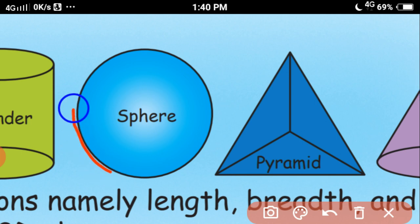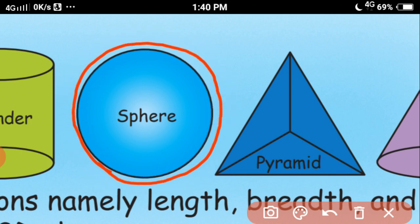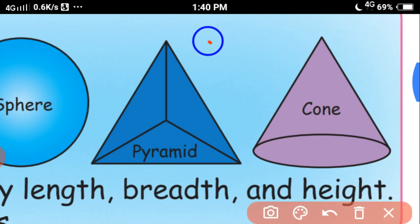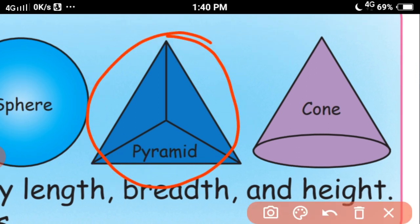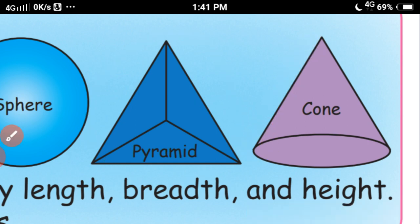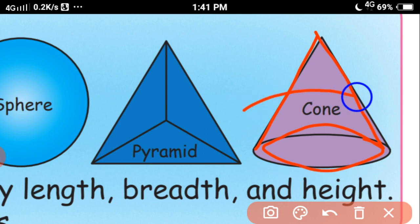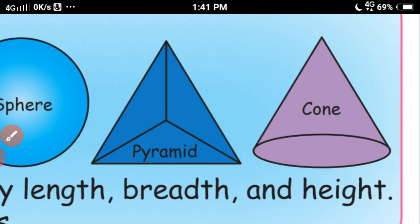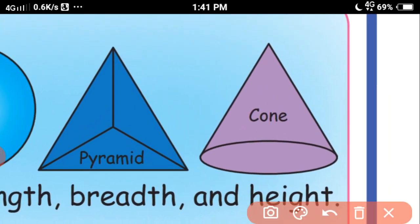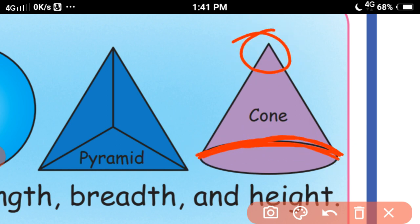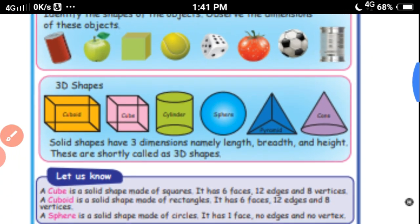Next, sphere. A sphere has only 1 curved face. There are no edges, no vertices — nothing else. Pyramid has 4 triangular faces, 8 edges and 5 vertices. Next, cone shape. A cone has 2 faces: one curved face and one flat face. It has one edge where the curved and flat faces join, and one corner at the top.